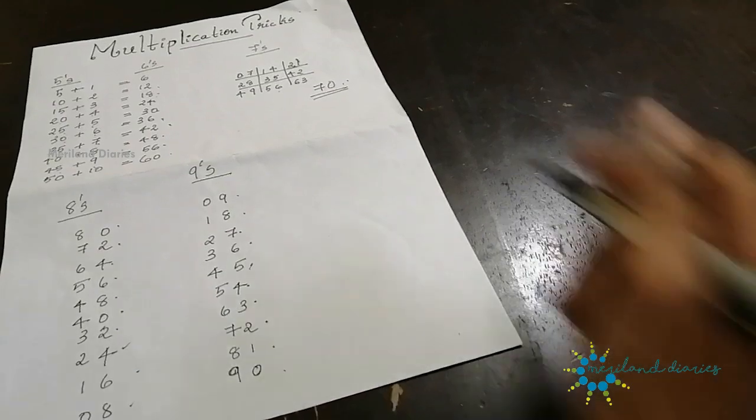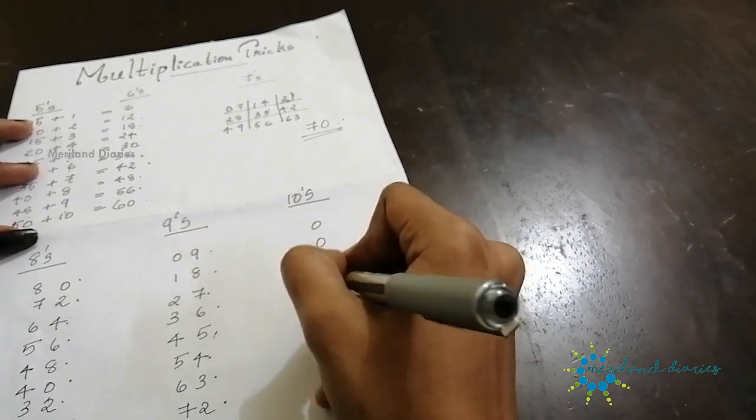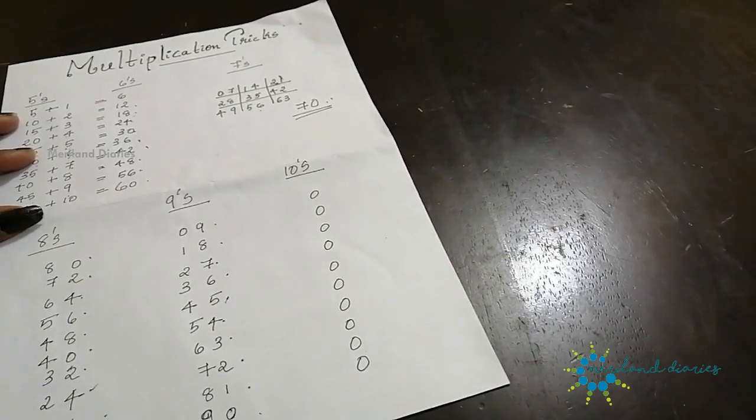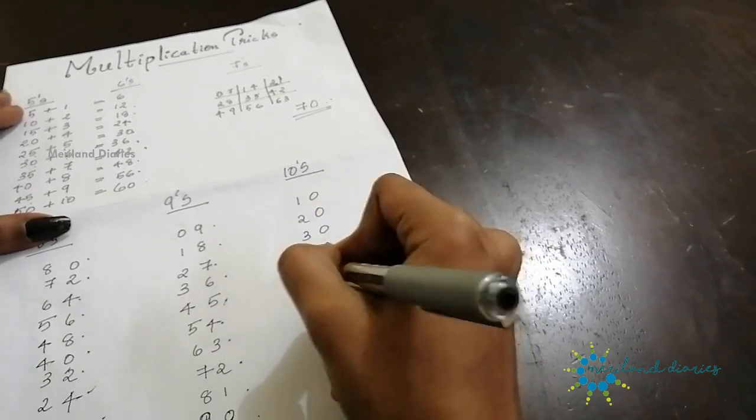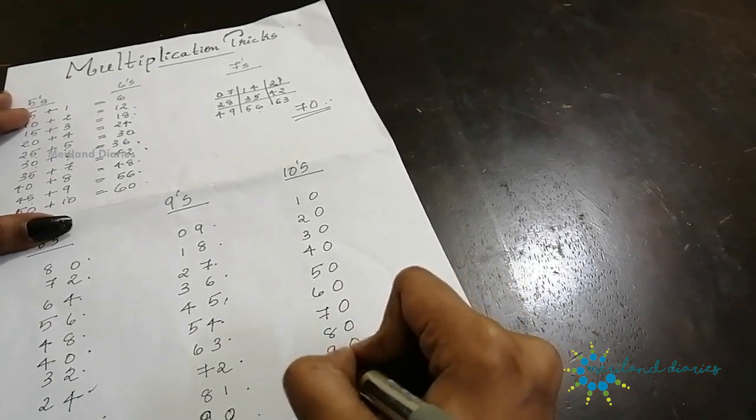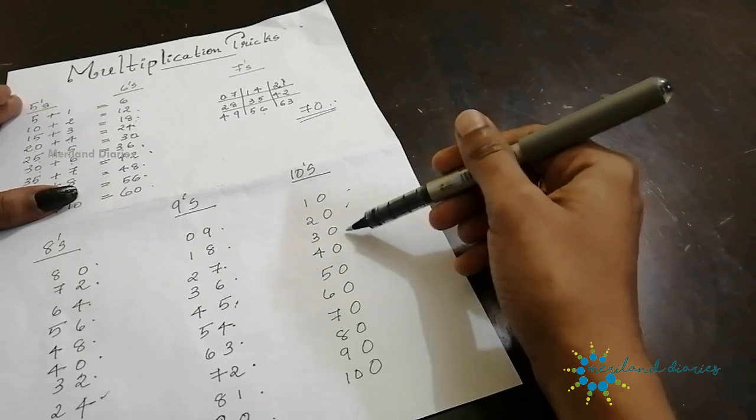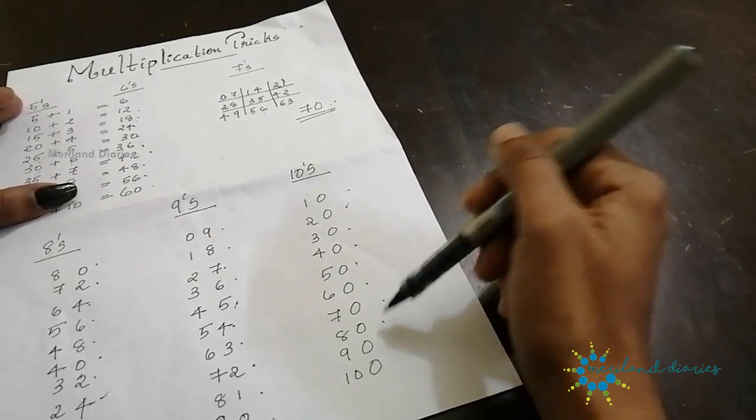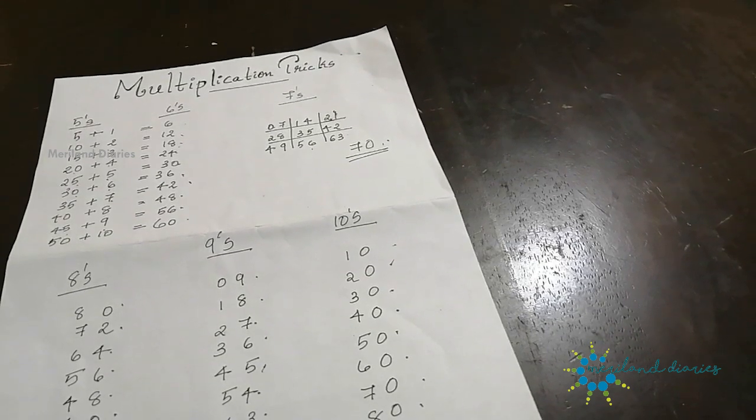Next is the 10 table. The 10 table is very easy. First we need to do just 0, then 10, 0. 0 plus natural numbers: 1, 2, 3, 4, 5, 6, 7, 8, 9, 10. 10 times 1 is 10, 10 times 2 is 20, 10 times 3 is 30, 10 times 4 is 40, 10 times 5 is 50, 10 times 6 is 60, 10 times 7 is 70, 10 times 8 is 80, 10 times 9 is 90, and 10 times 10 is 100. So now we have multiplication tables 5 to 10. Next will be 10 to 20.